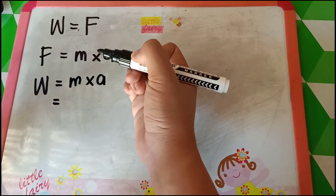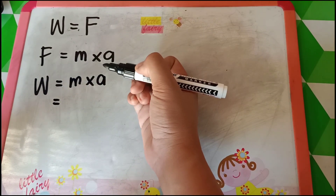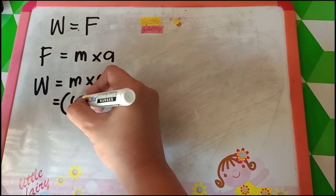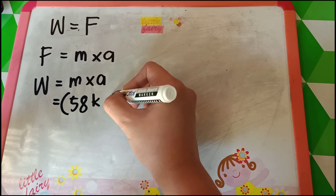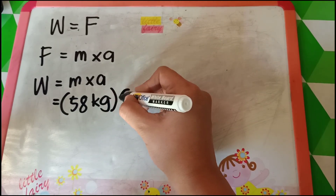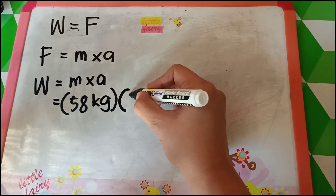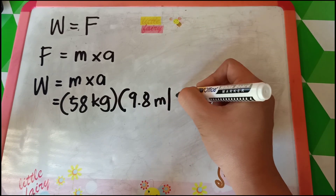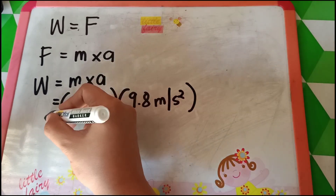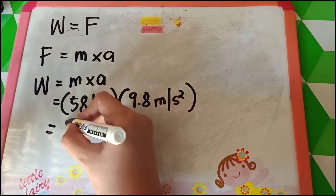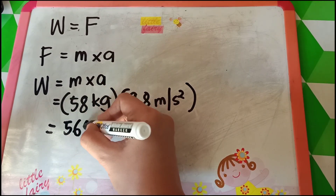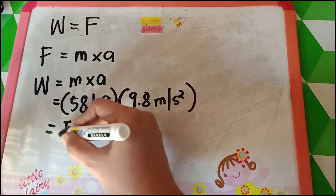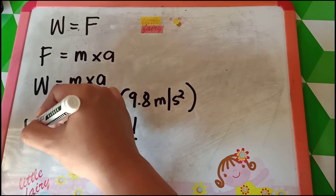In the problem, you will be using your own mass. I will be using my own mass too. I am 58 kilograms and I will multiply it with the acceleration due to gravity given in the problem, which is 9.8 meters per second squared. My answer will be 568.4 newtons. This is now my weight.